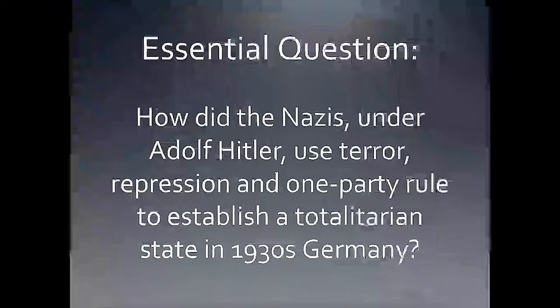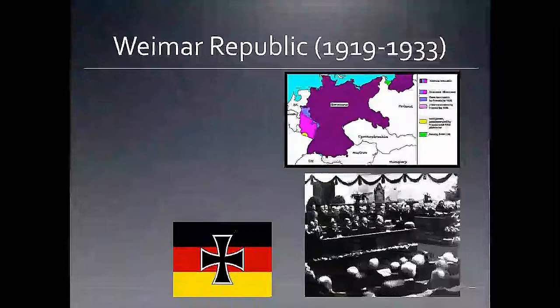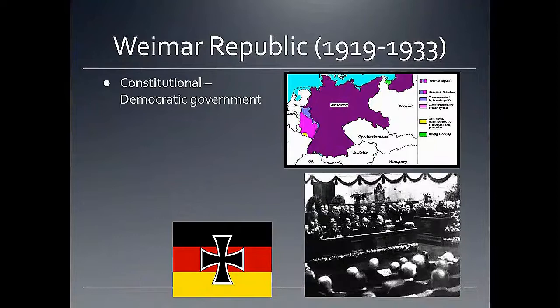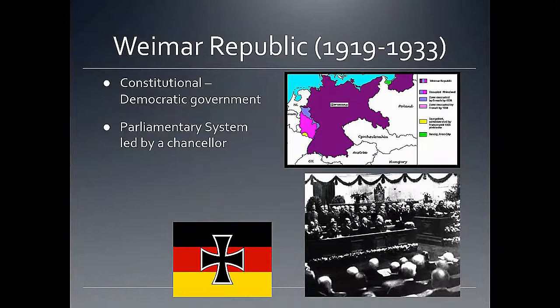We'll begin by looking at the Weimar Republic. This is the government formed in Germany in the wake of World War I, after the German Empire collapsed with the abdication of Kaiser Wilhelm II, as well as Germany taking the blame in the Treaty of Versailles and the heavy penalties it sustained. This government was a constitutional democratic government, organized as a parliamentary system where seats were chosen by German voters, and the majority party would form a government, with its leader often becoming chancellor.